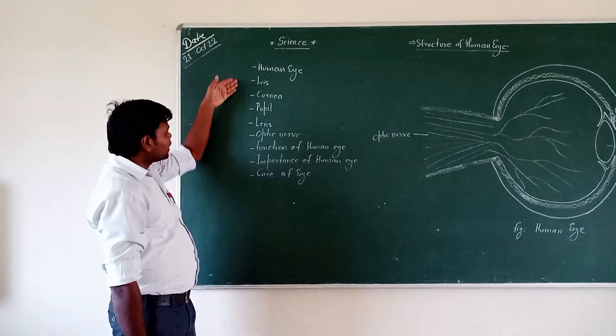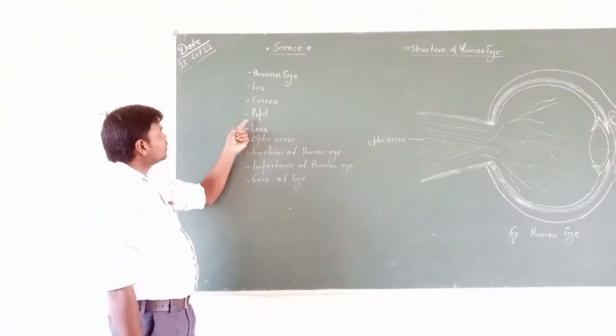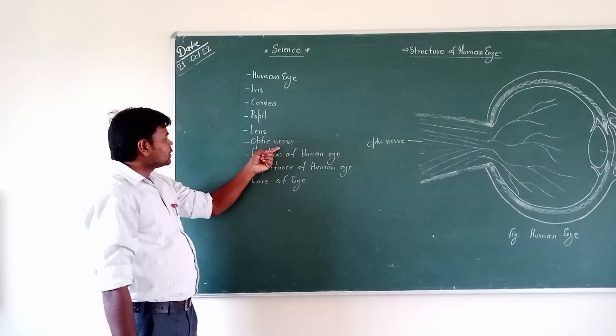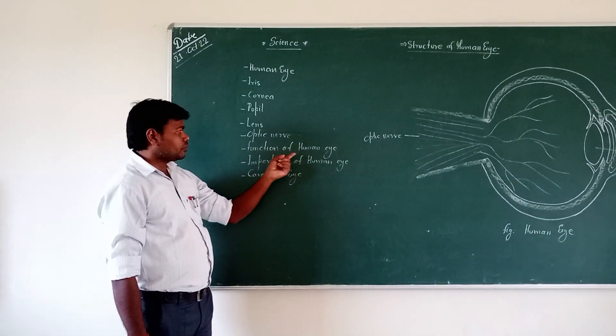These are some special parts of human eye such like iris, cornea, petals, lens, optic nerves, and the mechanism of function of human eye.